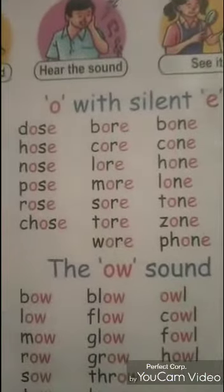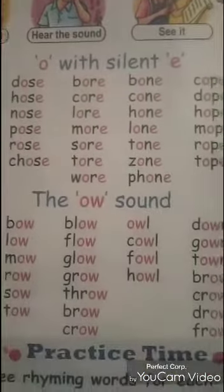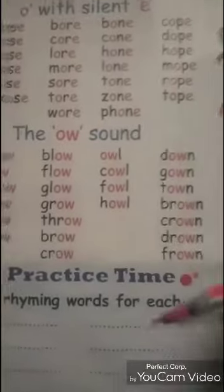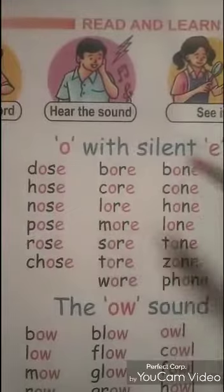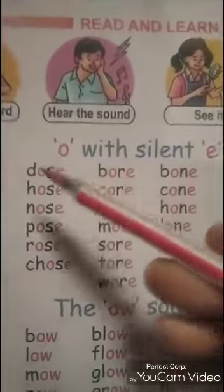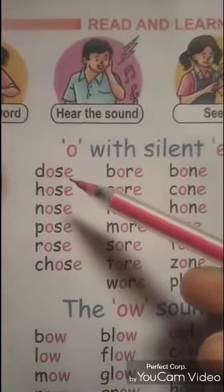Today we shall discuss about the O with silent E, and the O-W, O-U sounds in the sounds of vowel. Let's follow your book. Come to page number 10 of your English book. Here we can see O with silent E and the O-W sound. Here O sounds but E is silent. Do you understand?